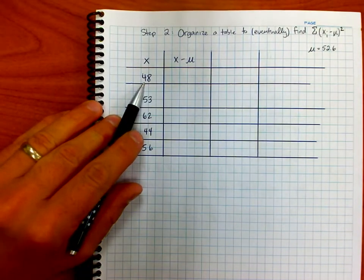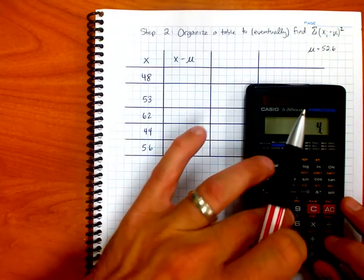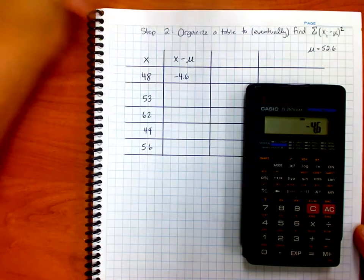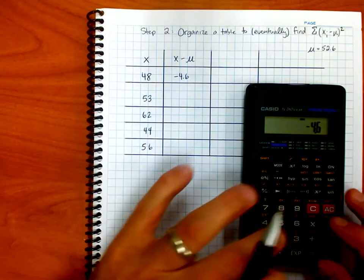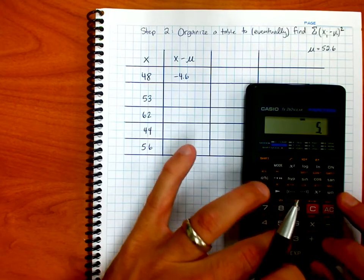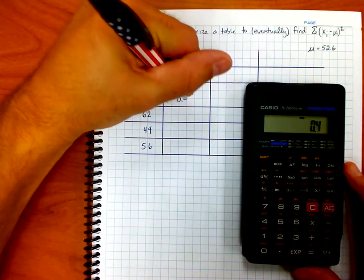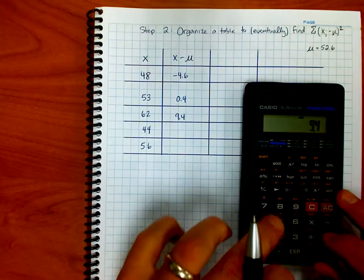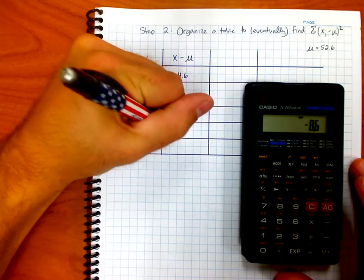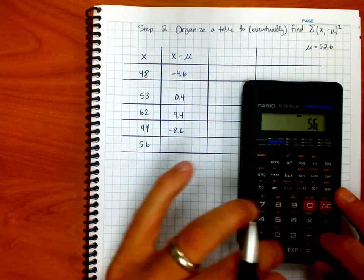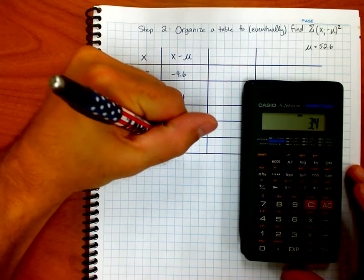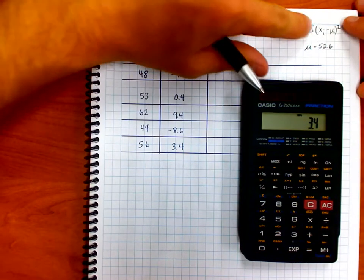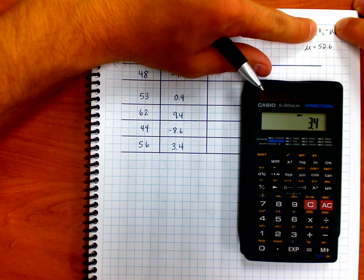So here is going to be 48 minus 52.6. Now this is going to give me a negative number, but I'm okay with that. That gives me a negative 4.6, but I'm going to record that. Then I have 53 minus 52.6, that gives me 0.4. I have 62 minus 52.6, that's 9.4. I have 44 minus 52.6, which is a negative 8.6. And I have 56 minus 52.6, and that's 3.4. So I'm just going to record these values. And basically at this point in time, all I've done is I've found the inside of the parentheses, right?